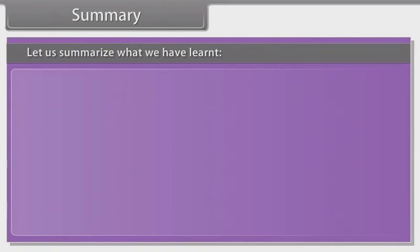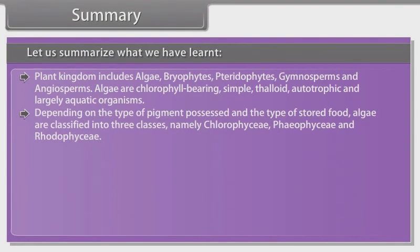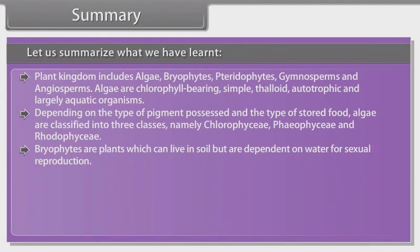Let us summarize what we have learned. Plant kingdom includes algae, bryophytes, pteridophytes, gymnosperms, and angiosperms. Algae are chlorophyll-bearing, simple, thalloid, autotrophic, and largely aquatic organisms. Depending on the type of pigment possessed and the type of stored food, algae are classified into three classes, namely Chlorophyceae, Phaeophyceae, and Rhodophyceae. Bryophytes are plants which can live in soil but are dependent on water for sexual reproduction.